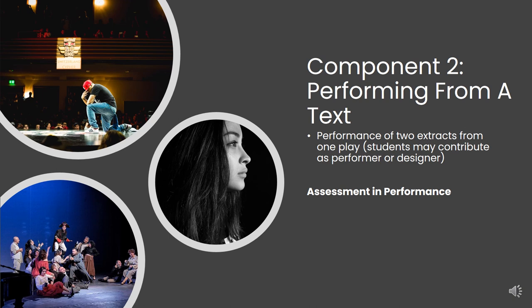Component 2: Performing from a Text. Pupils will explore two extracts of a given text. This component enables pupils to engage with exciting and relatable play scripts, challenging them to bring the writer's words to life and tell the story of the characters on stage. Once more, pupils have the choice of exploring performance or design elements.